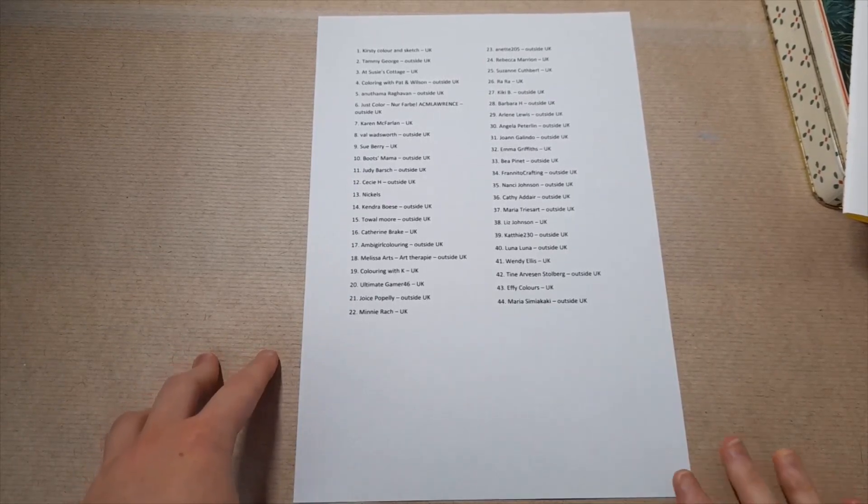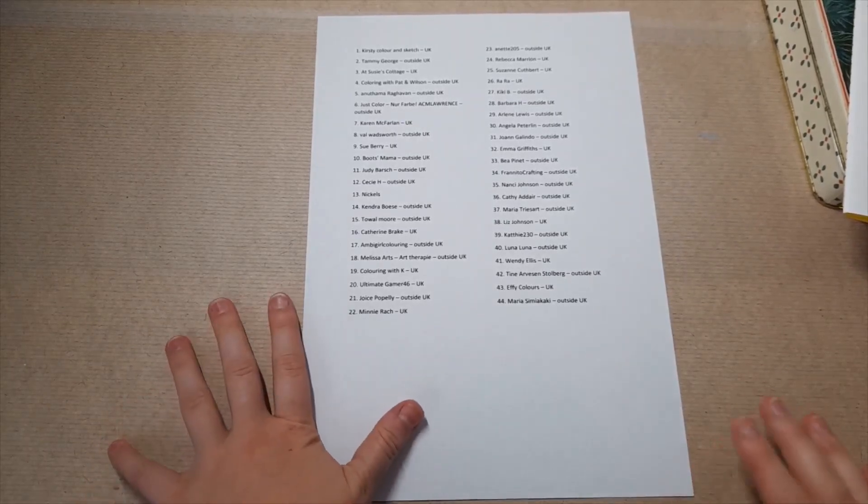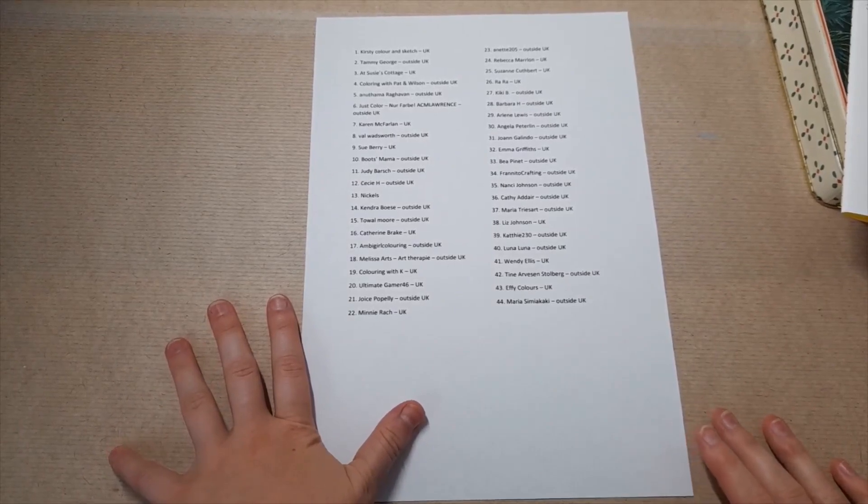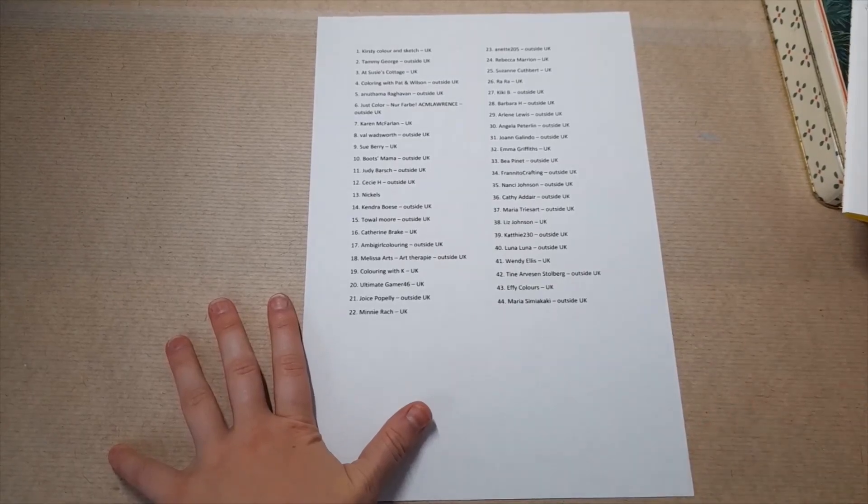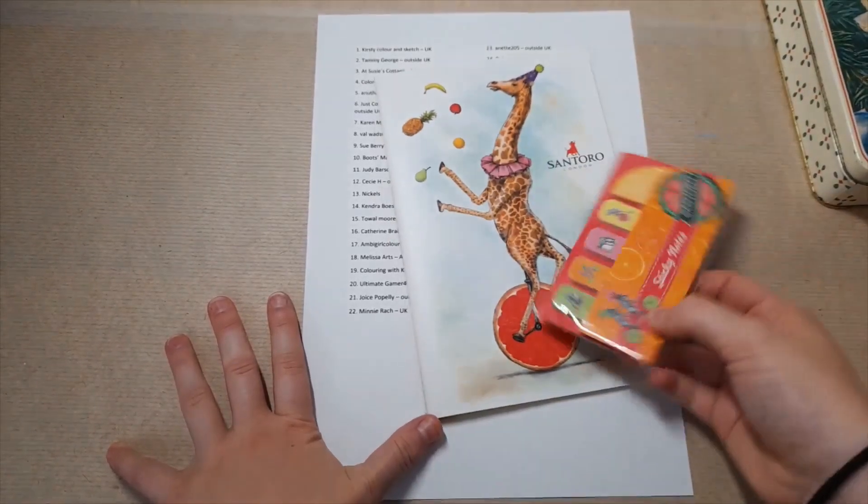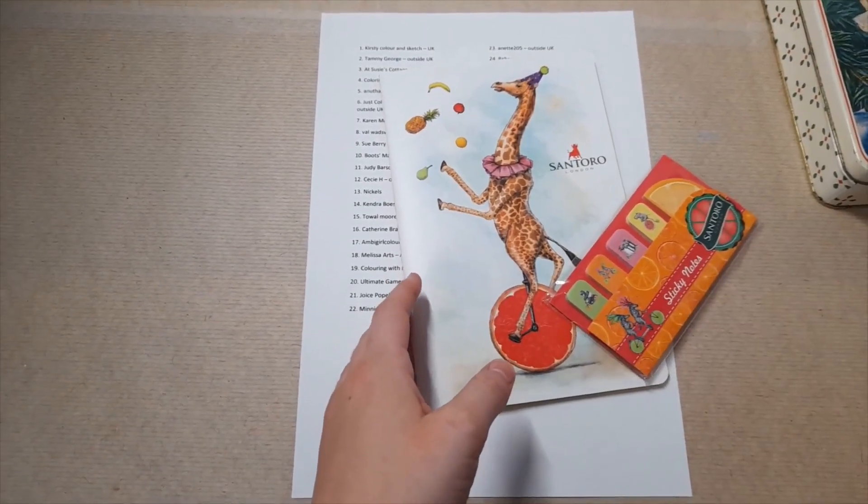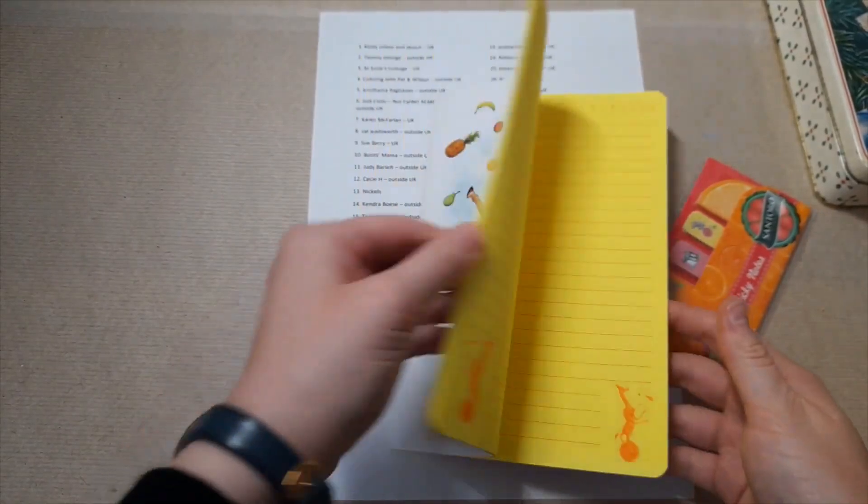And then the winner for the UK would receive a £10 voucher for the Colour Pencil Shop, which is an online shop which sells lots of colour pencils including Prismacolour pencils for those of us in the UK. And also these prizes, we've got the sticky notes and the Santoro notebook as well.